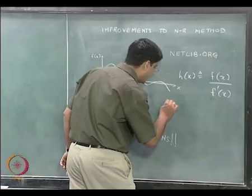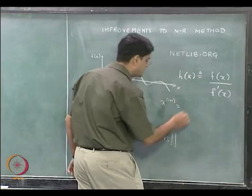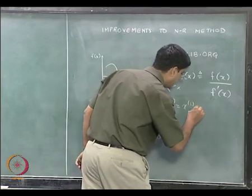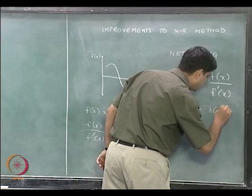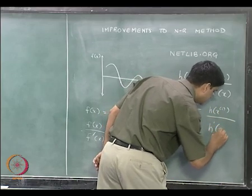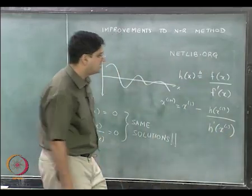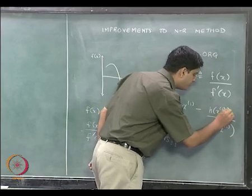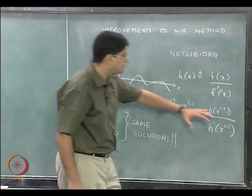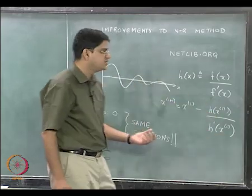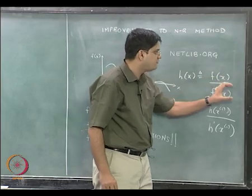So what we can have is x_{i+1} = x_i - h(x_i) / h'(x_i). For the function h(x), this will have the same convergence properties as Newton-Raphson's method. But in order to get the solution of f(x), this will have a faster rate of convergence than the original Newton-Raphson method.